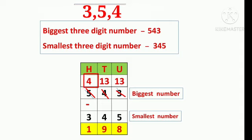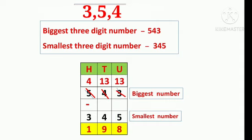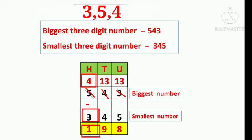Now we subtract from the units place: 13 minus 5 equals 8 units. Then tens place: 13 tens minus 4 tens equals 9 tens. Then hundreds place: 4 hundreds minus 3 hundreds equals 1 hundred. Our answer is 198.